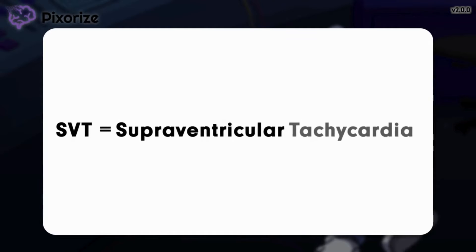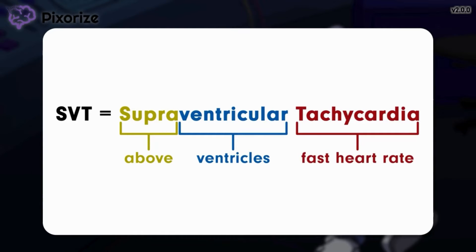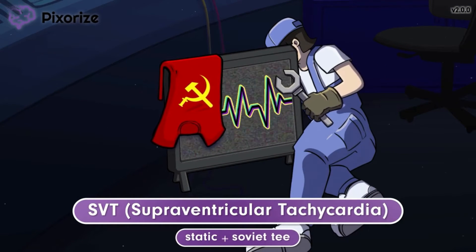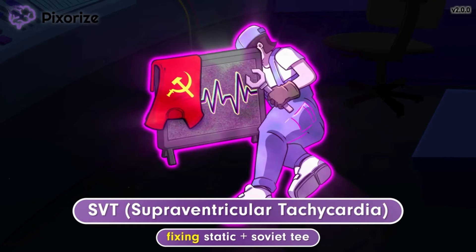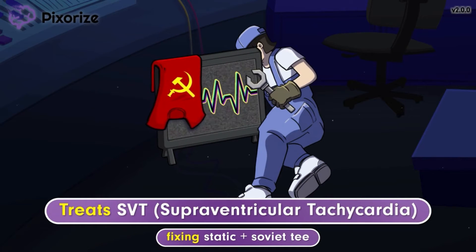SVT technically stands for supraventricular tachycardia. Supra means above, ventricular refers to the ventricles, and tachycardia describes a fast heart rate. Putting this together, supraventricular tachycardia refers to any unusually fast heart rhythm that originates above the ventricles. The Soviet T draped over the monitor with arrhythmia-like static should remind you that SVT is a type of arrhythmia. The electrician fixing the static with the Soviet T represents how adenosine treats SVT by briefly slowing down the heart's electrical signals, allowing the heart to reset and return to a normal rhythm.